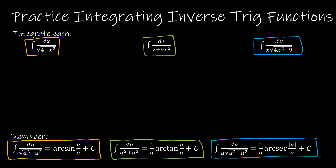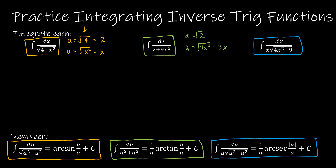The second thing is to make sure you have the correct value of 'a' and 'u'. 'a' is always going to be the square root of a constant. Most of the time it's straightforward, but particularly when you have a plus in the denominator, they like to switch these around, so it's important to know which is 'a' and which is 'u'. For example, a is the square root of 4, which is 2, and u is the square root of x squared, which is x. I encourage you to write the square root of 9x squared, which is 3x, to remind you it's always the square root, so you don't mistakenly say a is 2 when a is actually the square root of 2.